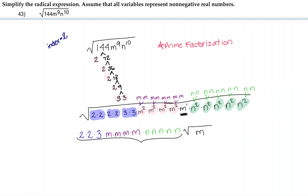2 times 2 times 3 is 12. I have 4 m's being multiplied together, so I'll rewrite that as m⁴. I have 5 n's, so that's n⁵. Then I'll bring down the square root of m, and that is our final answer.